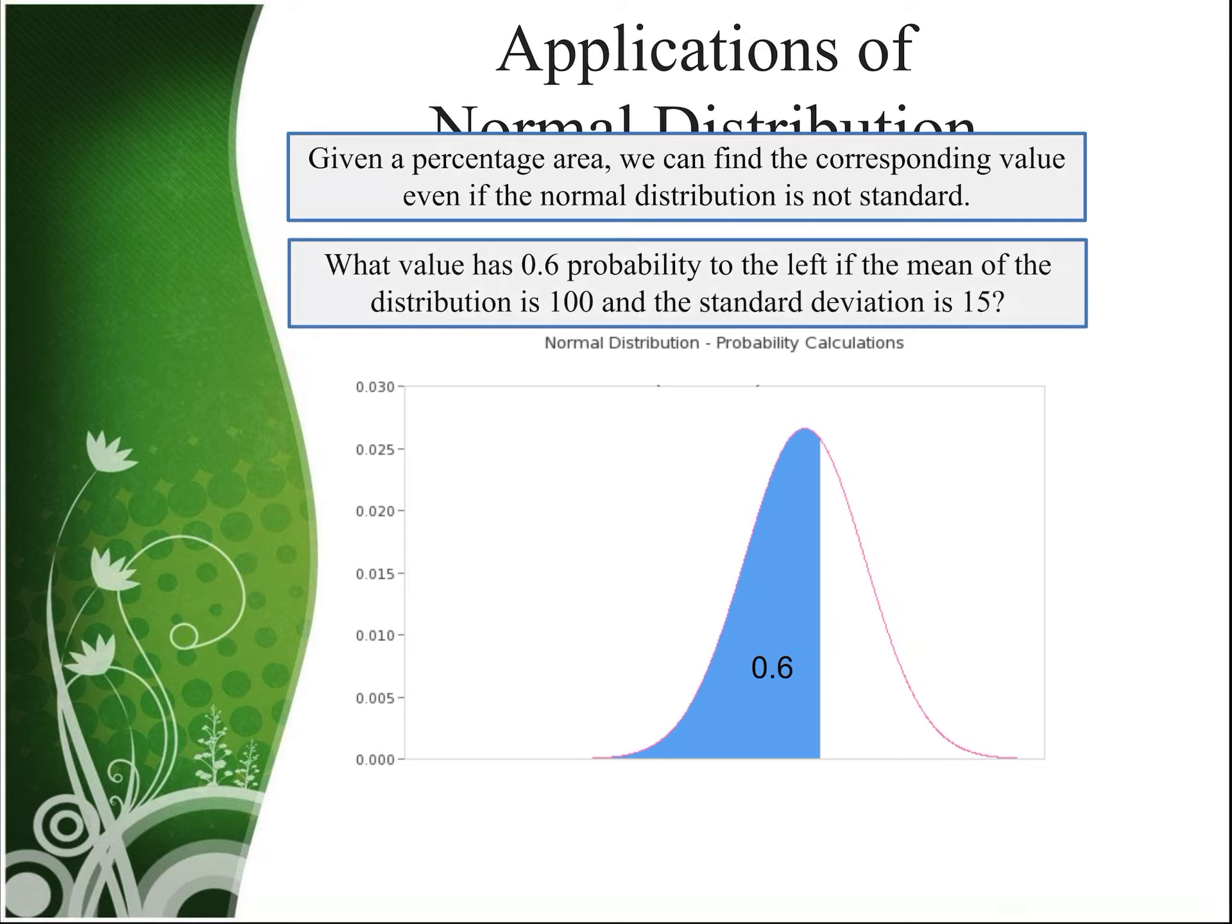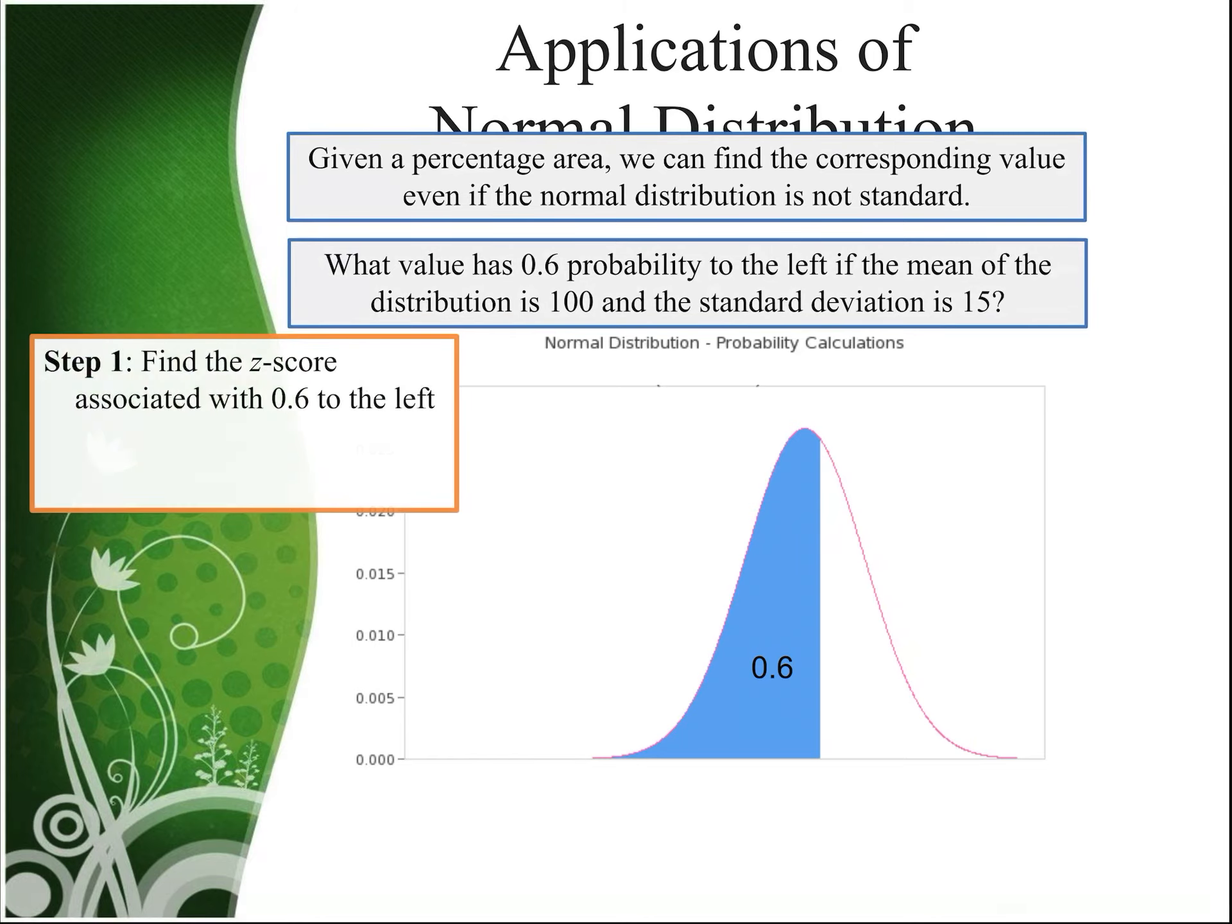Let's go the other direction. So let's say that we know the area, we know the probability, and we need to find the corresponding x value. So what value has a 0.6 probability to the left if the mean of the distribution is 100 and the standard deviation is 15? So in this problem, the first thing we need to do is find the z-score associated with .6 to the left.